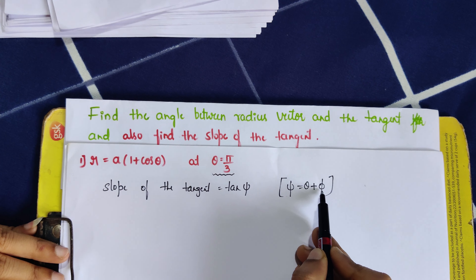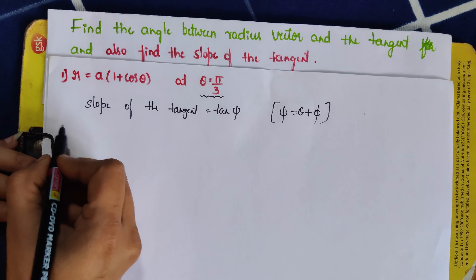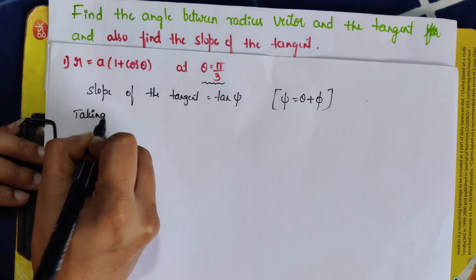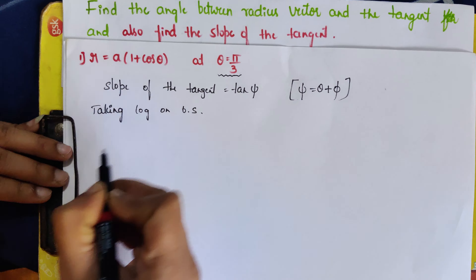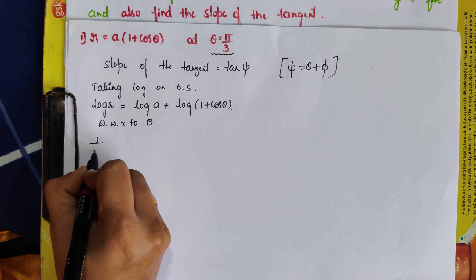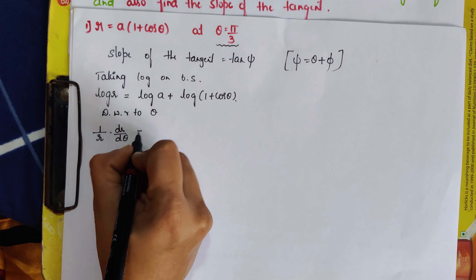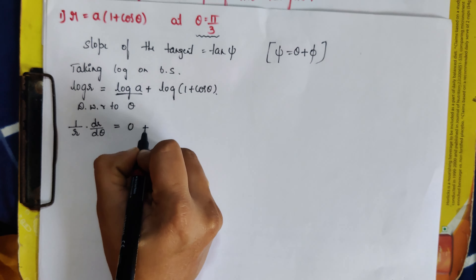Now first we will find what φ is using the procedure from the last video. Taking log on both sides — this is the first step to find φ. The left-hand side becomes log r. The right-hand side is in the form log(mn), so we use the property log(mn) = log m + log n, giving log a + log(1 + cosθ). Now differentiate the whole equation with respect to θ. We get (1/r)(dr/dθ) = 0 + 1/(1 + cosθ).